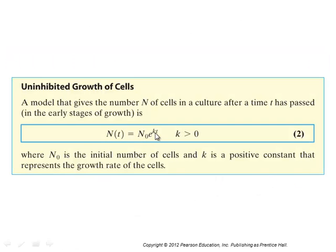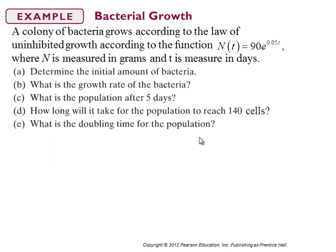Uninhibited growth of cells uses this exponential growth model where you start off with N₀ as the beginning population. k is a positive constant that represents the growth rate of cells. The number of cells as a function of time t is given by N₀ times e to the kt. We would expect k to be positive because if you put any number of cells in a culture and give it some time, that quantity of cells is going to do nothing but increase.